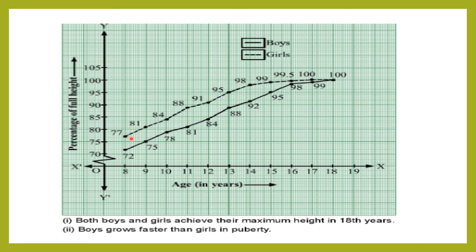From the graph, both boys and girls achieve their maximum height at the age of 18, that is 100%. Between 14 to 16 years of age, the boys grow faster as the percentage increase for boys is greater. Thank you.